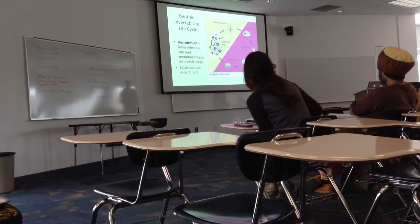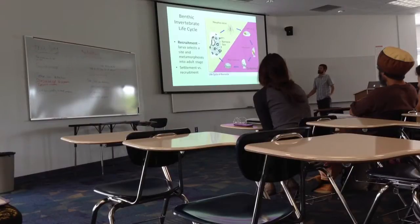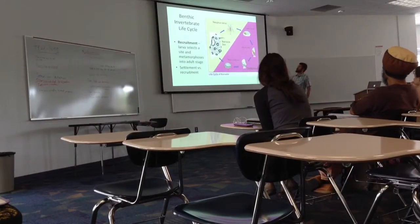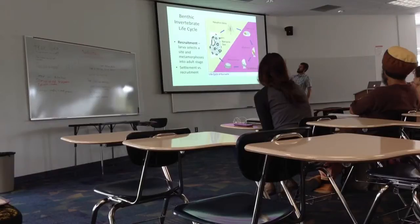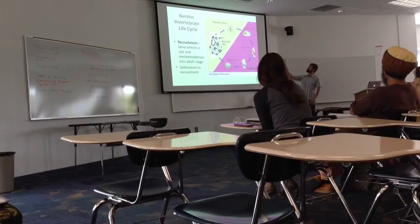Just to refresh your memory, we talked a little bit about the classic benthic invertebrate life cycle. Here we're talking about barnacles — these guys actually don't move around. They do have internal fertilization, so they produce nauplii larvae and release the larvae directly. These larvae spend a lot of time up in the water column feeding on phytoplankton and other things before they develop into a different type of larvae called cyprid larvae.